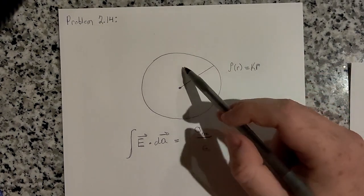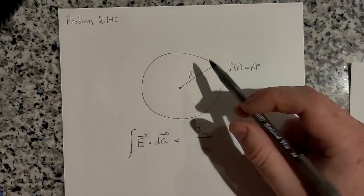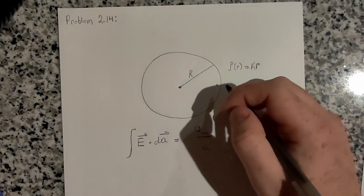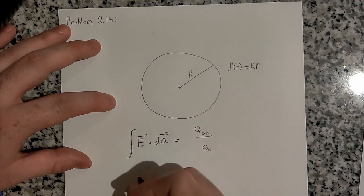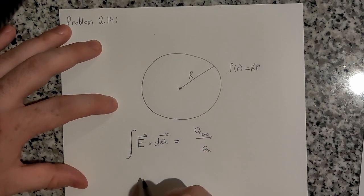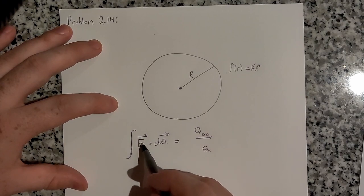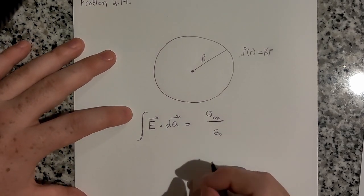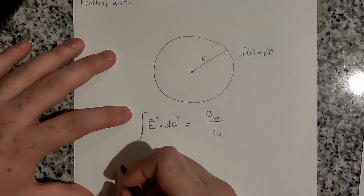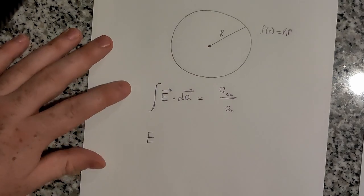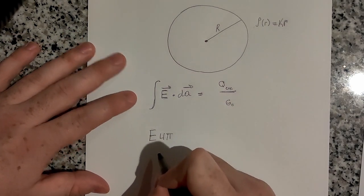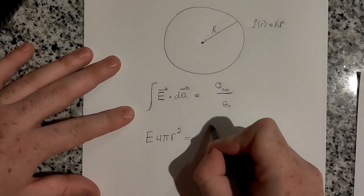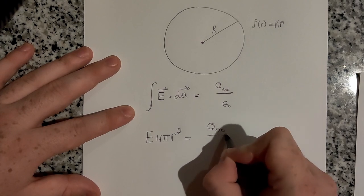Our Gaussian surface is going to be inside of the sphere because it asks us to find the electric field inside of the sphere. So our Gaussian surface is going to be a sphere of radius little r. If we write down the left side of this equation, at our Gaussian surface, the electric field magnitude is going to be constant along our sphere, so that'll just be E, the magnitude of E, times the integral over the surface area, which is 4πr². And this is equal to q enclosed over ε₀.